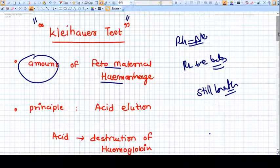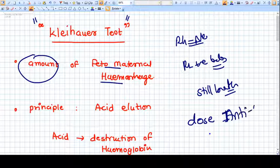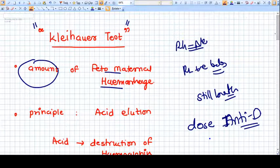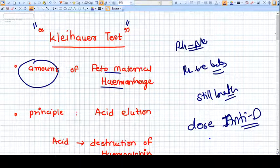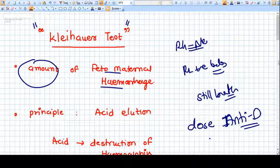What we do here is determine the amount of fetomaternal hemorrhage. Why we need to know this amount? Because according to this amount we will decide the dose of anti-D, that means anti-D immunoglobulin given to the mother for prophylaxis or further deterioration prevention.